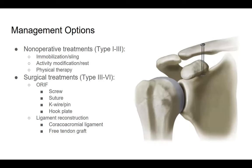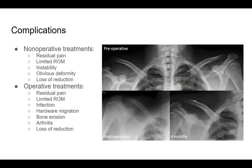Management options: non-operative treatment — including sling immobilization, activity modification, rest, and physical therapy — is used for type 1 to 3 dislocations. Surgical treatment is usually reserved for type 3 and above. Surgical options include ORIF with screws, sutures, K-wire pins, or hook plates, and ligament reconstructions using coracoacromial ligament or free tendon grafts. Suture button fixation is shown here. Complications of non-operative treatment include residual pain, limited range of motion, instability, and deformity. Operative complications add infection, hardware migration, bone erosion, and arthritis.